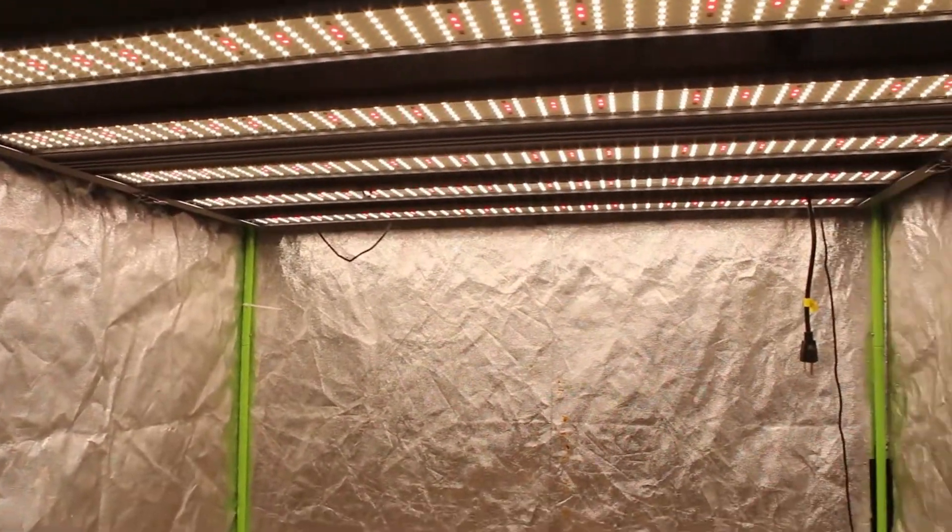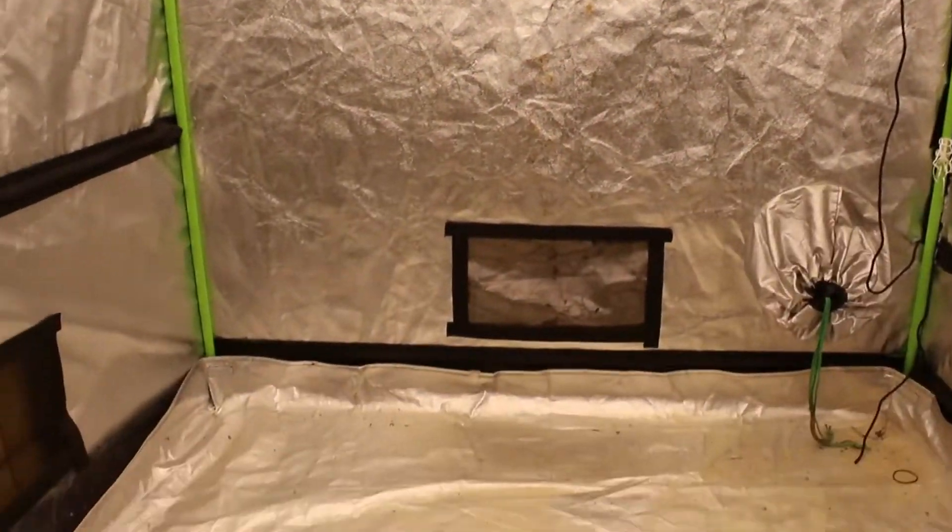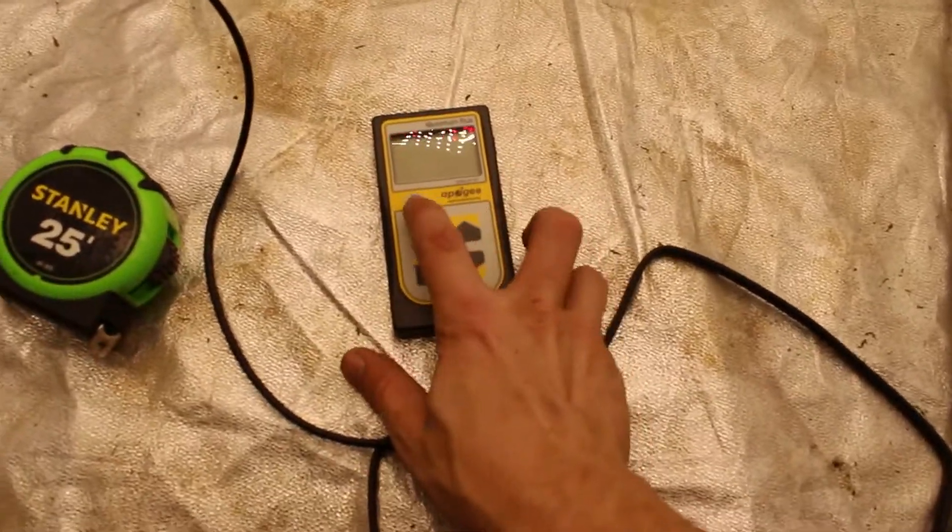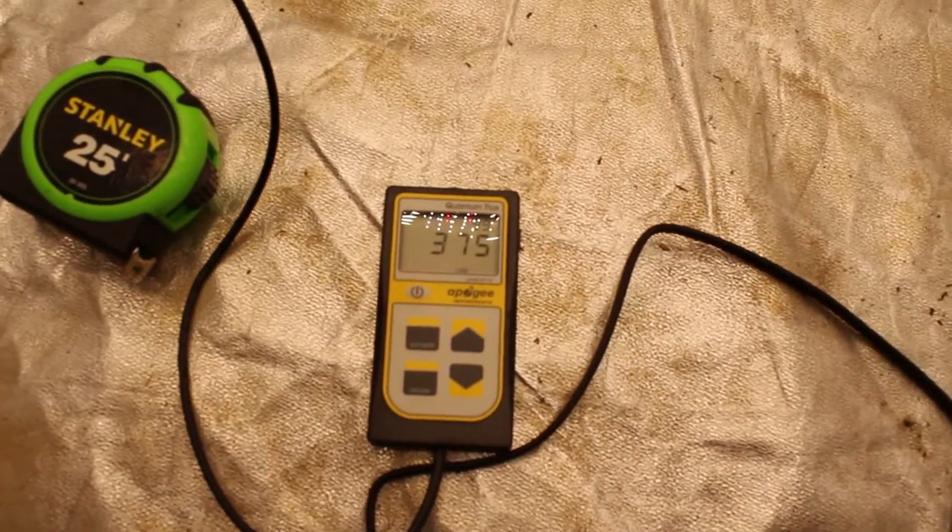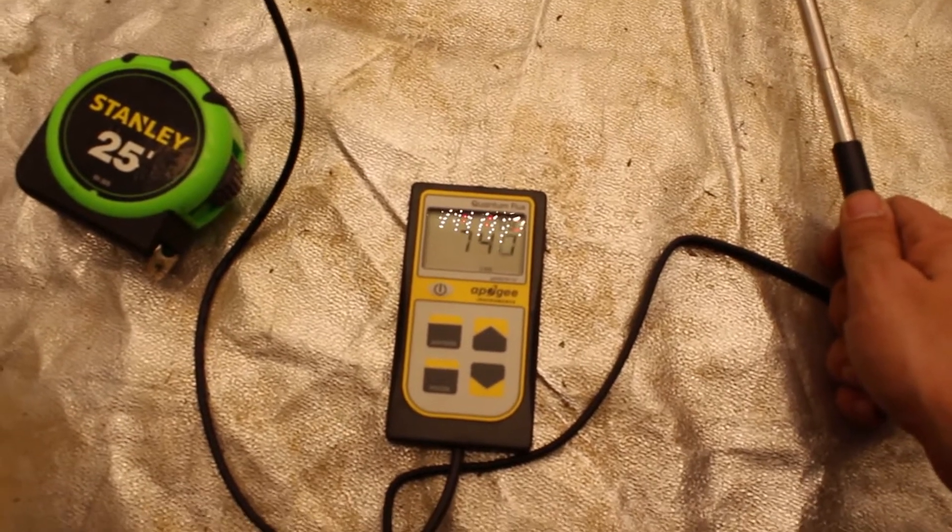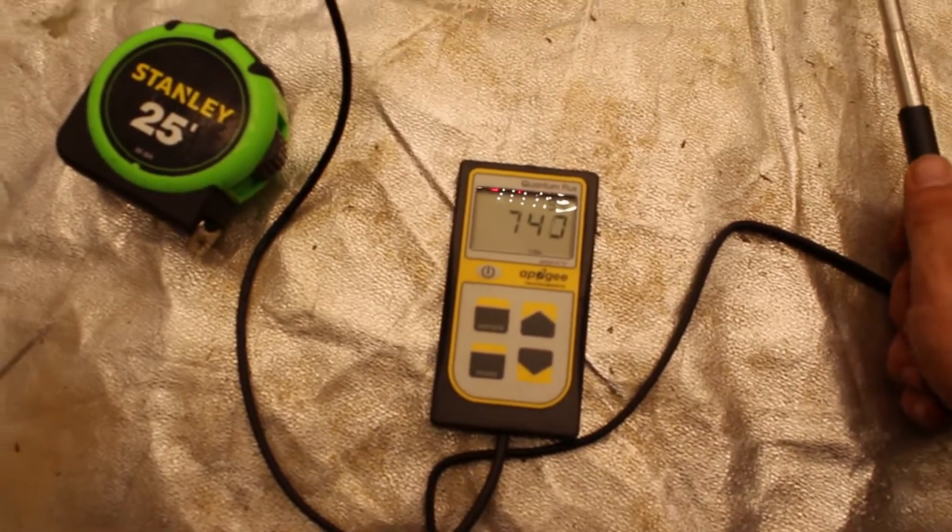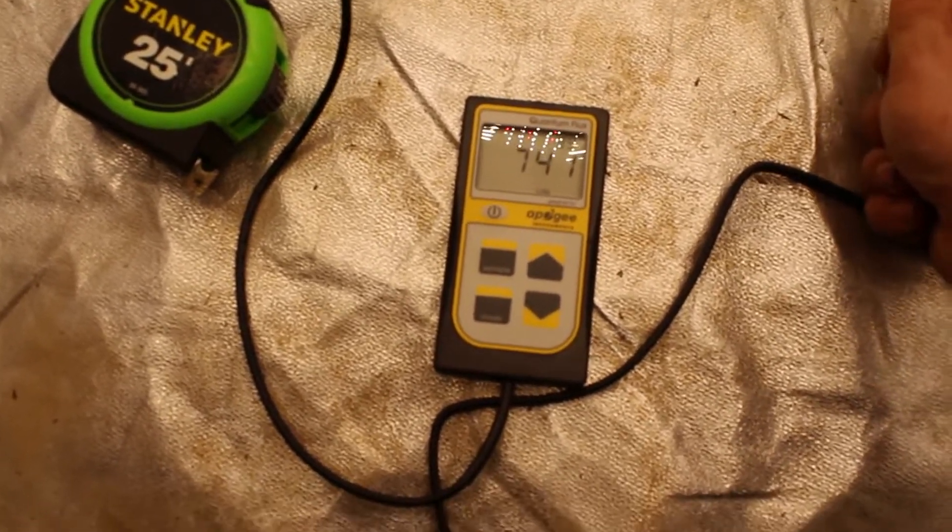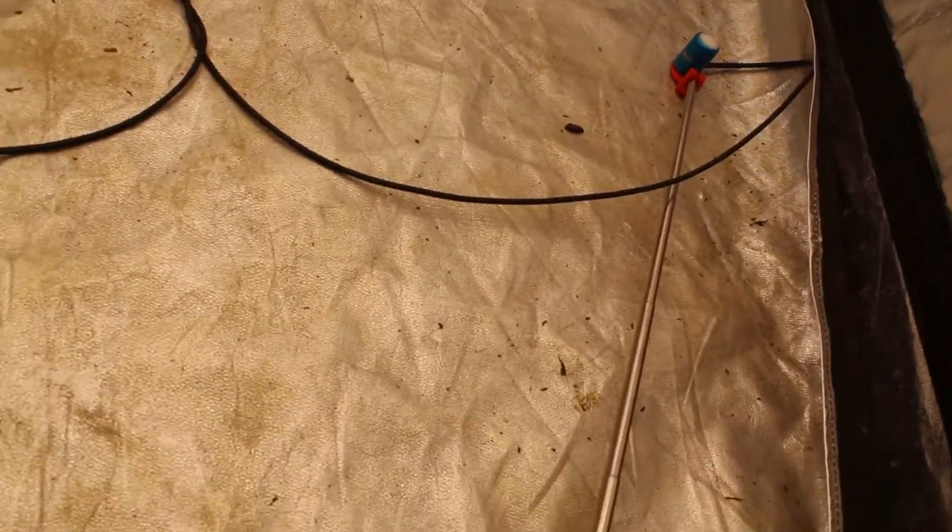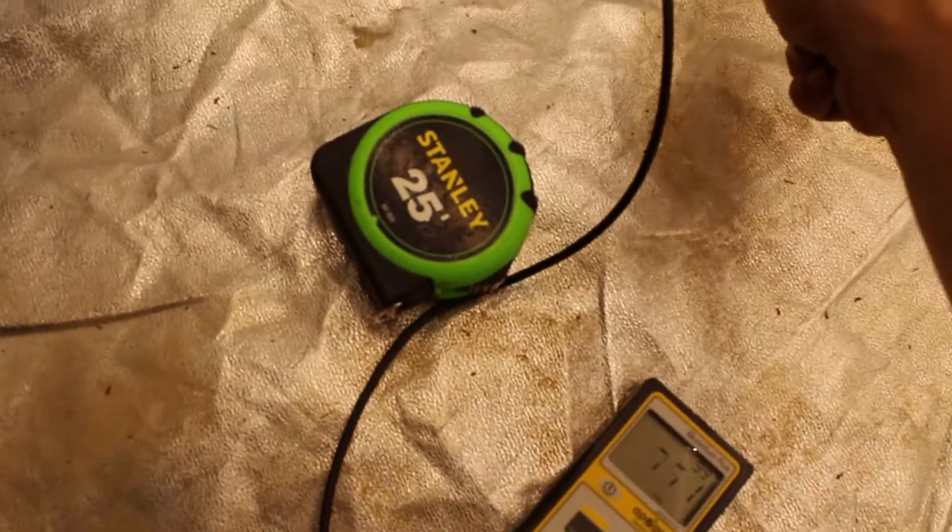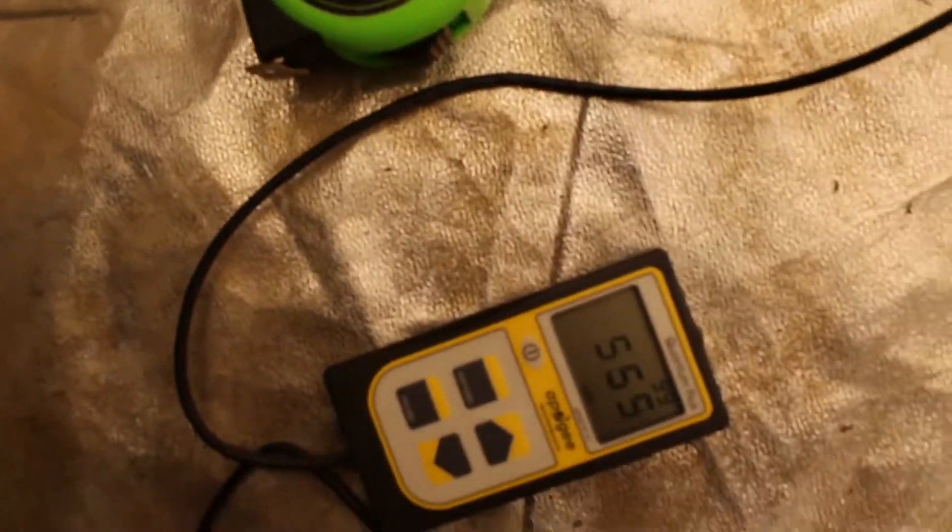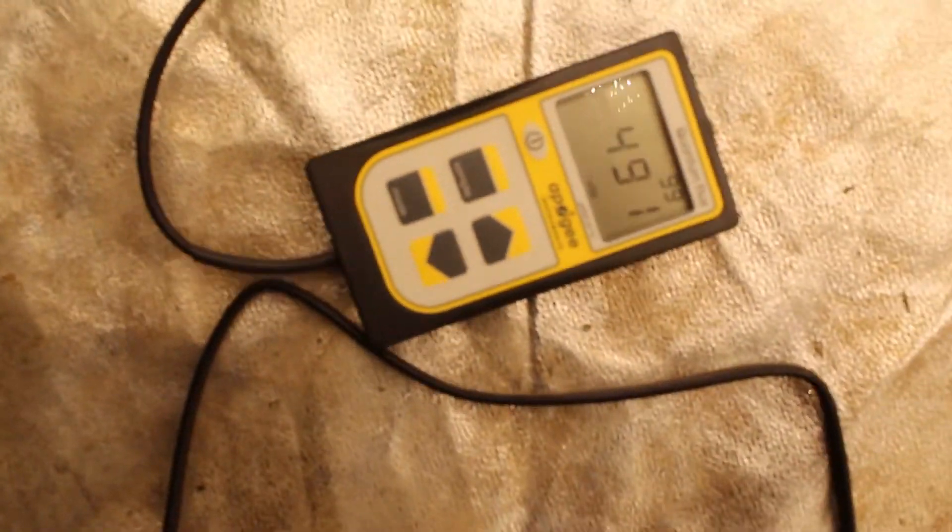All right guys, we're back at three feet now, let's see what we got. About 750. Right side. Left side. 588. Back side 550, 504.